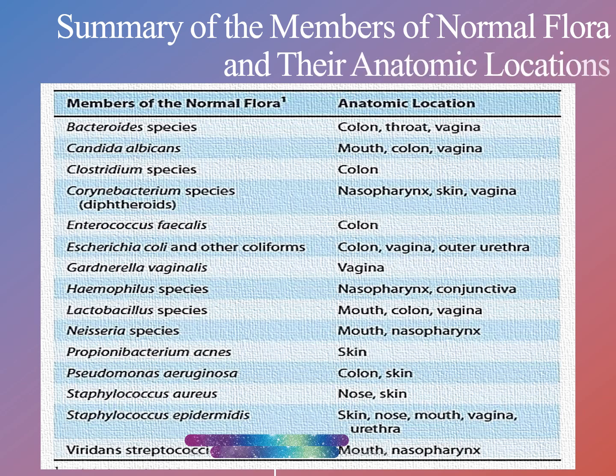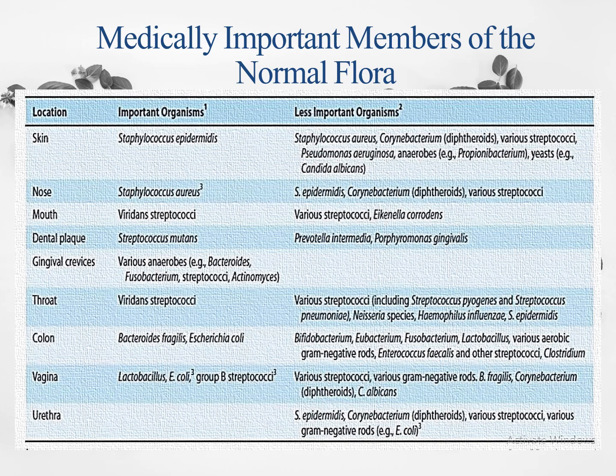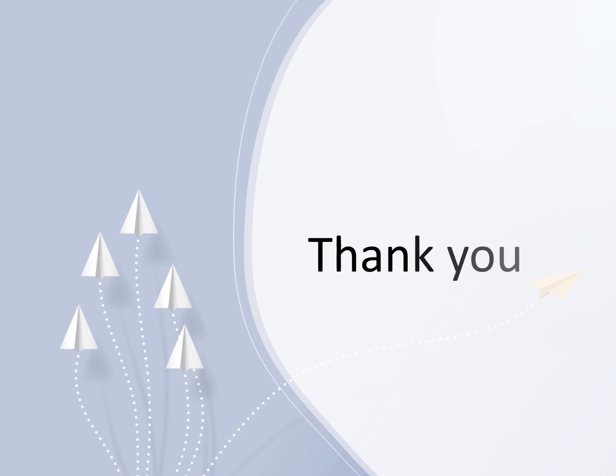In summary, the normal flora varies by anatomic location, each site harboring its characteristic major and minor microbial members. Thank you, and stay tuned for more informative videos like this.